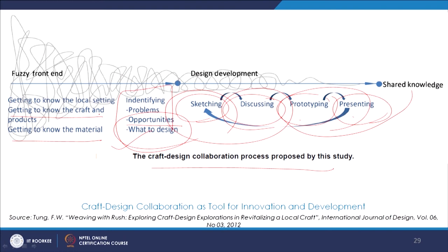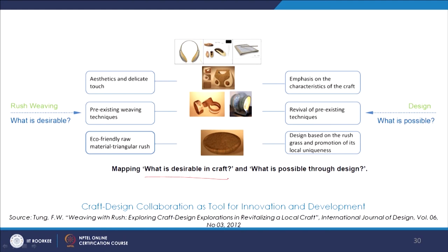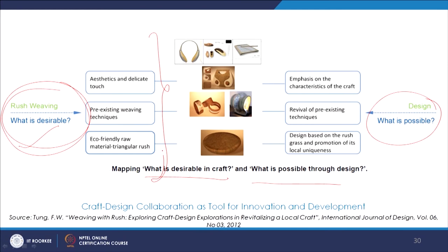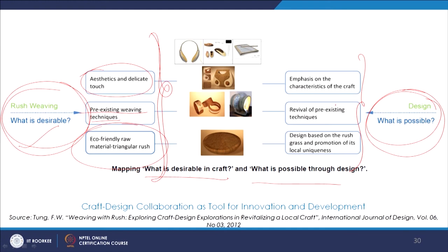Mapping what is desirable in craft and what is possible through design is an important approach. What is already desirable when talking about the craft and craft community — their pre-existing techniques, their knowledge of aesthetics and material culture, and their harmony with nature — and what else design could provide: some revival to the pre-existing techniques, promotion of local uniqueness through design, but giving a sort of a global approach.